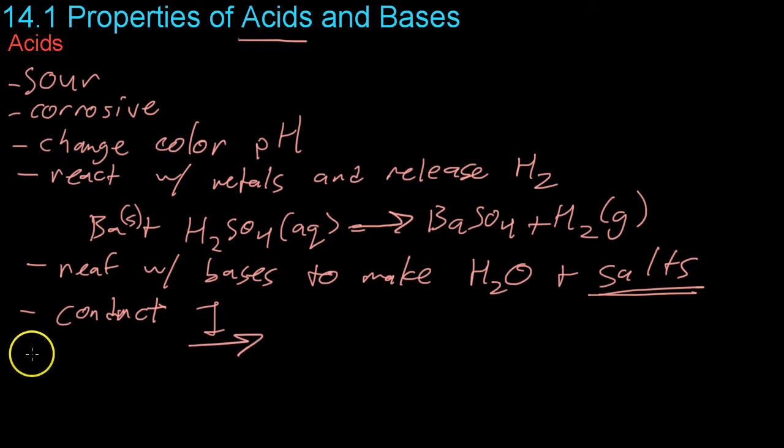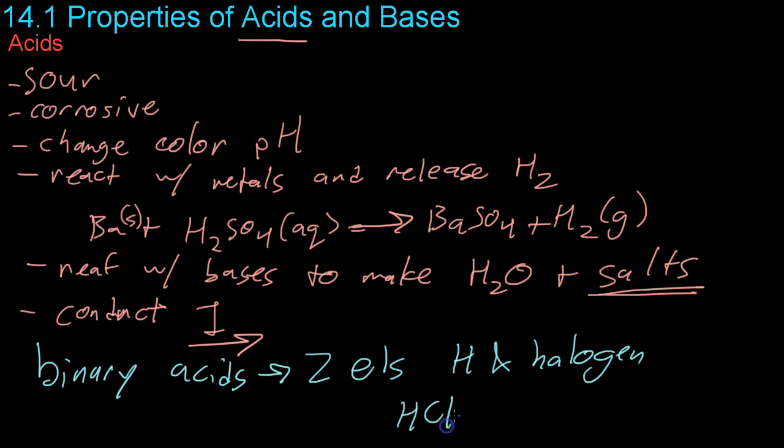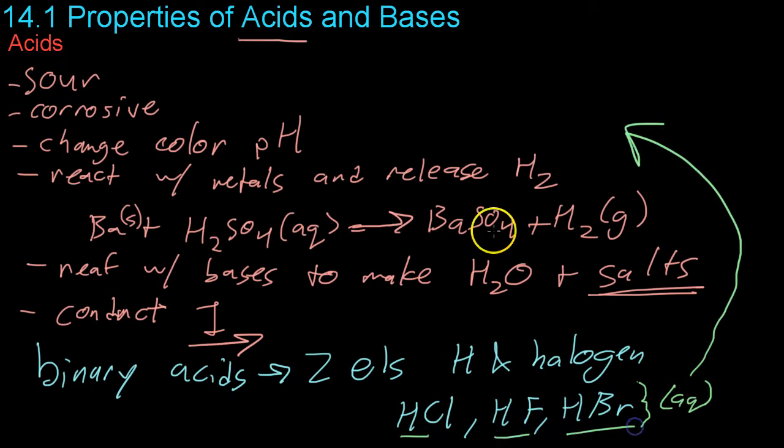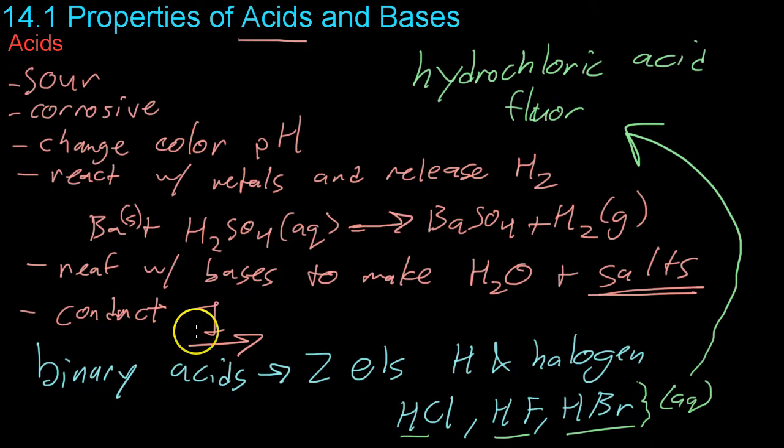Now that we know the properties we have to get into some quick nomenclature so first off there are some acids which are known as binary acids and these are composed of solely two elements usually hydrogen and most of the time a halogen. So for example hydrogen chloride HCl, hydrogen fluoride, hydrogen bromide etc but when these are in solution that is when they're aqueous we don't call them their typical binary compound name hydrogen chloride hydrogen fluoride hydrogen bromide instead we would call the first one let's say hydrochloric acid. Similarly this would be hydrofluoric acid as you go down the list and hydrobromic acid.